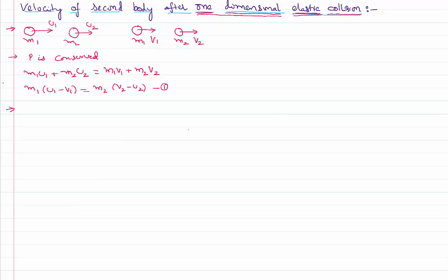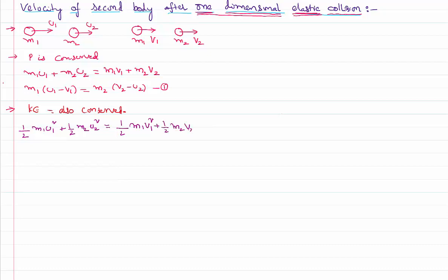Since the collision is elastic, it's not only momentum that is conserved — kinetic energy is also conserved. The initial kinetic energy of the system equals the final kinetic energy: ½m1·u1² + ½m2·u2² = ½m1·v1² + ½m2·v2². Cancelling the halves and rearranging gives m1(u1² − v1²) = m2(v2² − u2²). Let me call this equation number two.